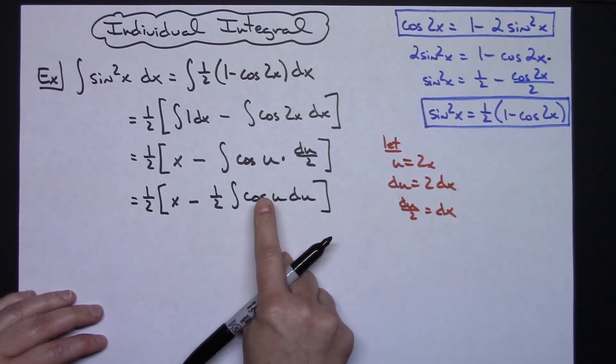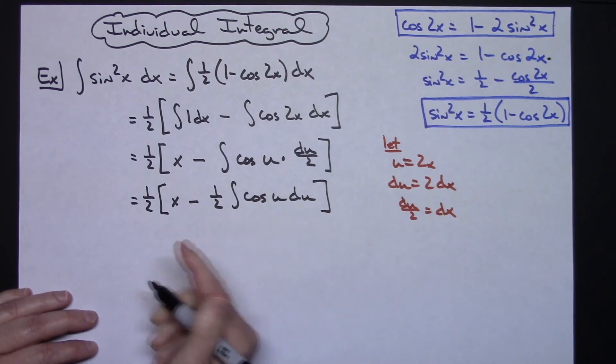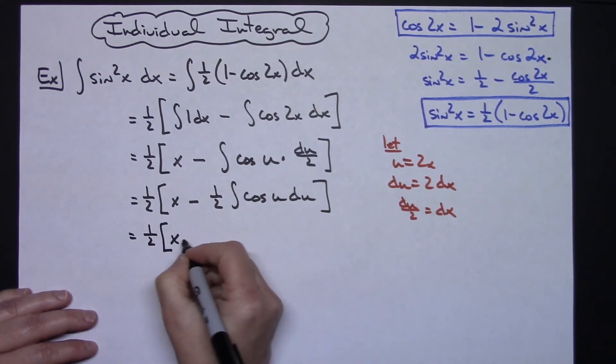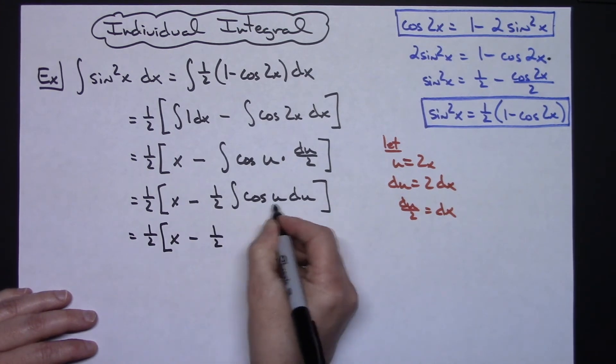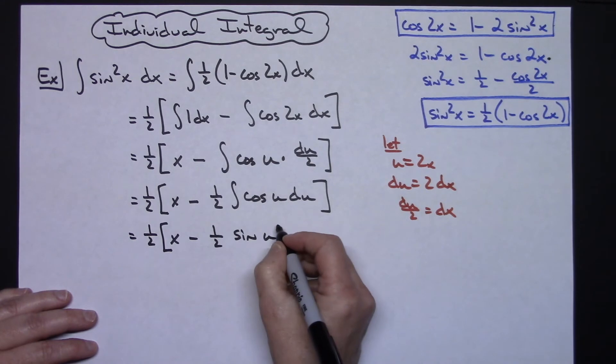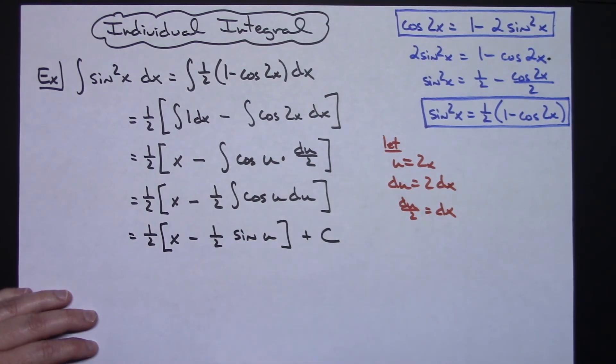This is a straight integration that's going to integrate to a sine. So we'll have a 1 half times the quantity x minus 1 half. Integrating cosine, I get a sine. So sine u and then plus c.